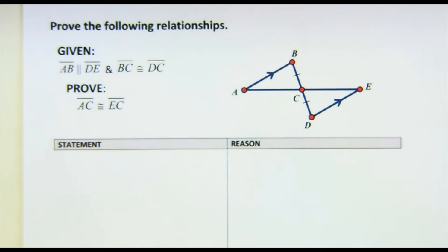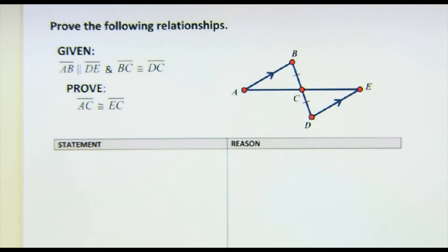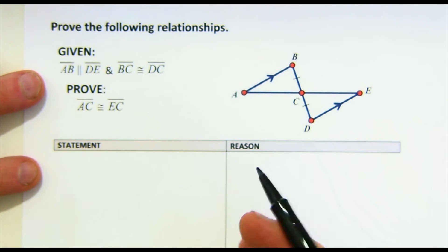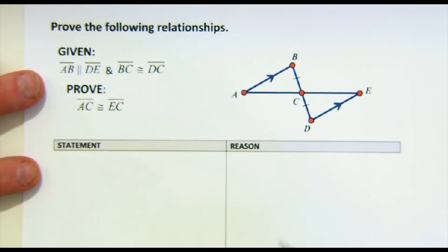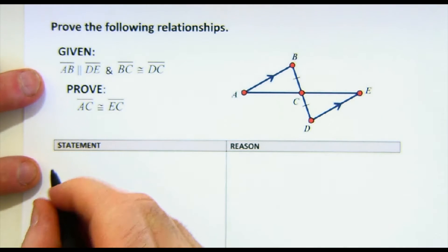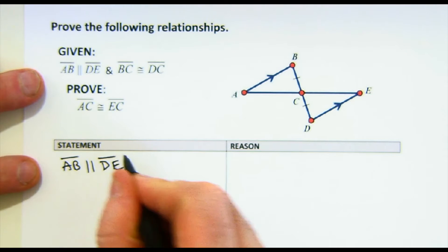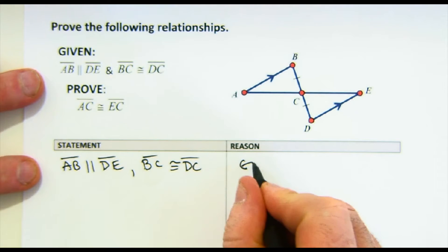So again, the first thing we notice about this particular proof is that it's not proving congruent triangles — it wants to prove some sides that are congruent. The logic we're going to use is to prove the triangles are congruent first, and then once they're congruent, corresponding parts of those two congruent triangles will have congruent angles and sides. Like all other proofs of this type, I like to start with the givens. In this case I can get them all on one line.